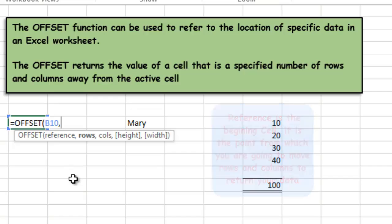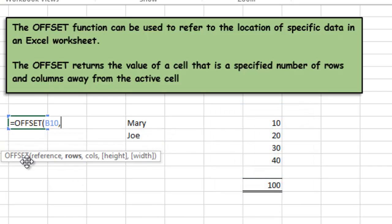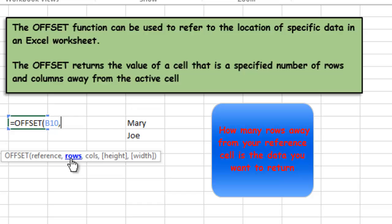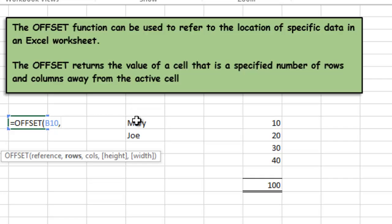I'm just going to move this screen tip out of the way. What I want to do is return either Mary's name or Joe's name into this cell by using the OFFSET function. First it's looking for the reference, then it's looking for the rows. The rows means how many rows away is it that you want to find the data.